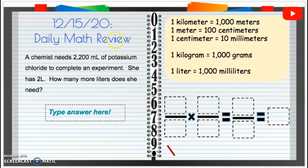All right, so first of all, we need to figure out 2,200 milliliters of potassium chloride. How many liters is that? Let's take a look, and then we'll need to see how many more she needs.